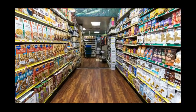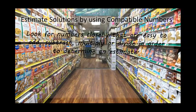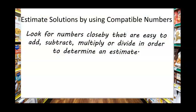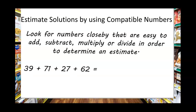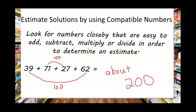Another way we can estimate solutions is by using compatible numbers. To use compatible numbers, look for numbers close by that are easy to add, subtract, multiply, or divide in order to determine an estimate. For example, when adding 39 plus 71 plus 27 plus 62, I can estimate the sum by combining numbers that estimate to 100. 39 and 62 are about 100, and 71 and 27 are about 100, so that's 200. So our answer would be about 200.